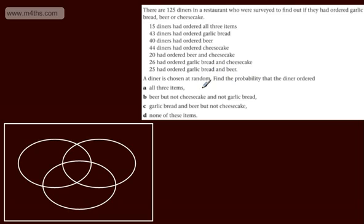Find the probability that the diner ordered A, all three items. B, beer but not cheesecake and not garlic bread. C, garlic bread and beer but not cheesecake. D, none of the items.